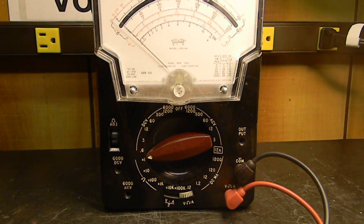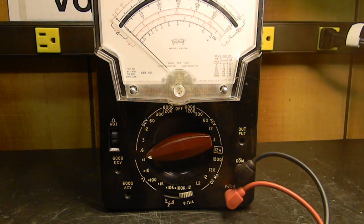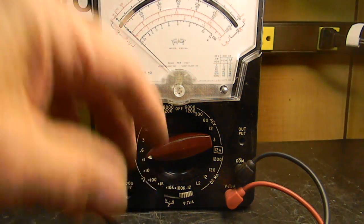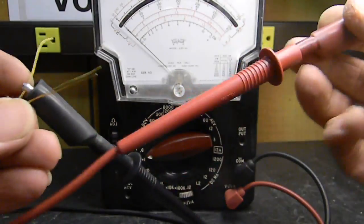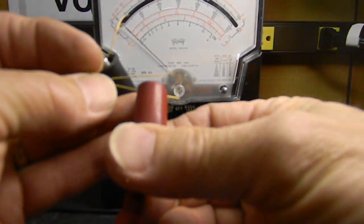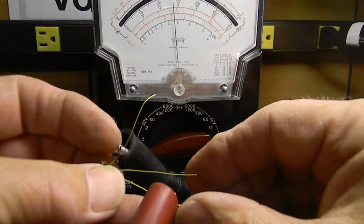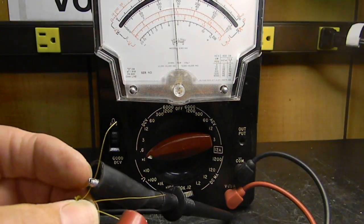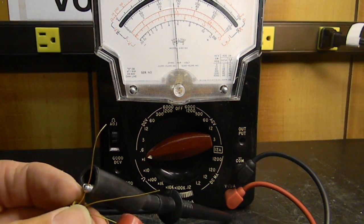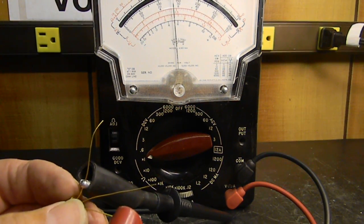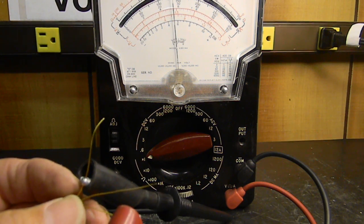I've got the old triplet meter on R times one. I'll get one of the small SCRs again. Negative lead to the cathode, positive lead to the anode. Short it. See how the meter turns on and stays on? So you can use a meter too.